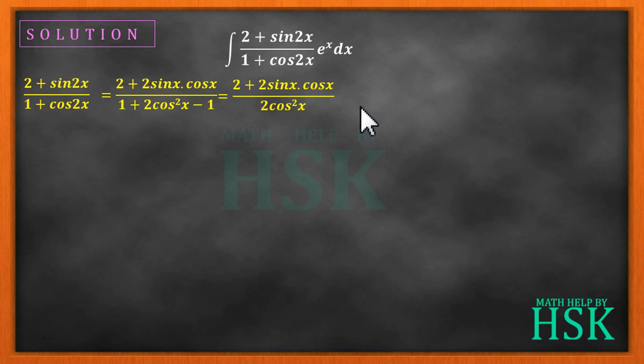All these twos can be cancelled out and I'm going to obtain (1 + sinx cosx)/cos²x. This cos²x is divided separately with 1 and sinx cosx to give me 1/cos²x + (sinx cosx)/cos²x, so this can be written as sec²x + tanx.